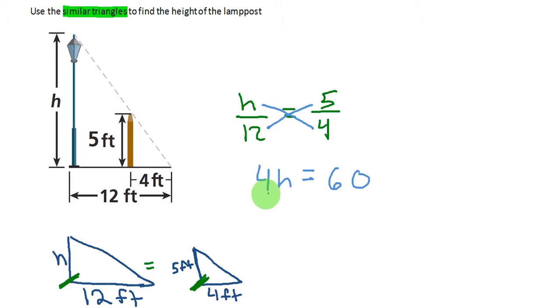How do we isolate the variable h? We have to undo multiplication of 4. We'll do that through dividing by 4, and if I do it to this side, I've got to keep the equation balanced. Let's do it to the other side. The 4 and the 4 are going to cancel, and I am left with h is equal to 15.